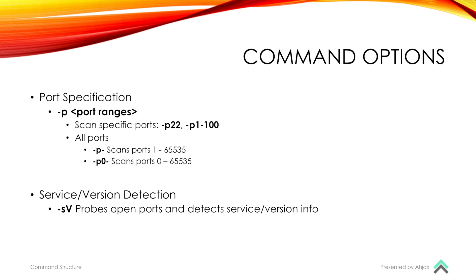The next category is port specification, which you'll probably use pretty often. It's -p followed by your port ranges — you can scan a specific port or set of ports, such as -p 22 or -p 2-100. You can also scan all ports by doing -p-, which scans all ports from 1 to 65535. There is also a port 0, which is not commonly used, and by default NMAP doesn't scan for it, but sometimes attackers run applications through port 0. If you want to scan all ports including port 0, you do -p 0-.